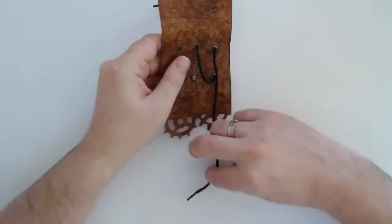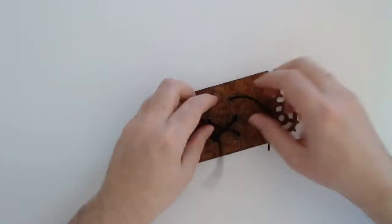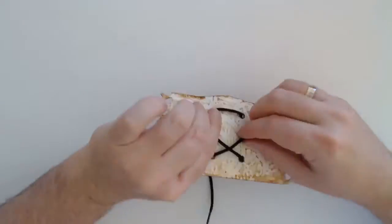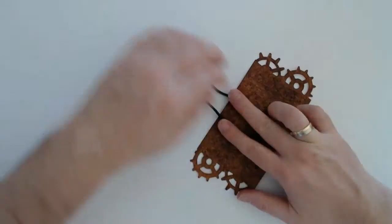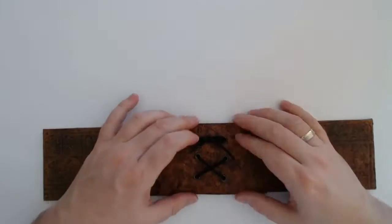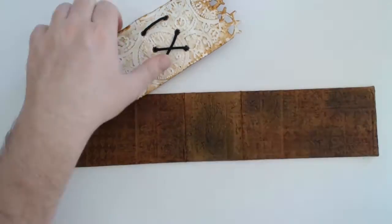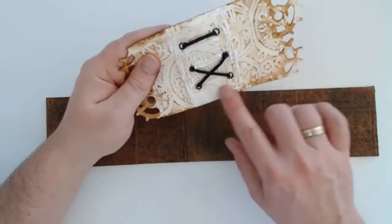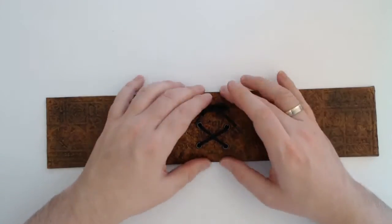Now I'm threading an old shoelace through the holes and tie a bow at the top. And this whole piece I'm now adhering onto the spine by using the liquid glue again.